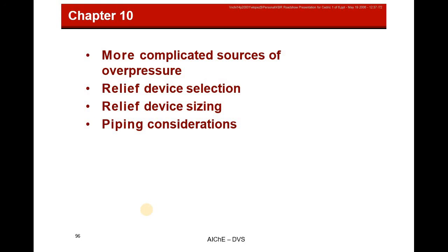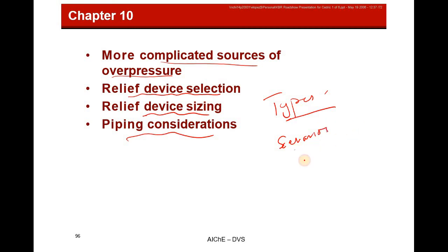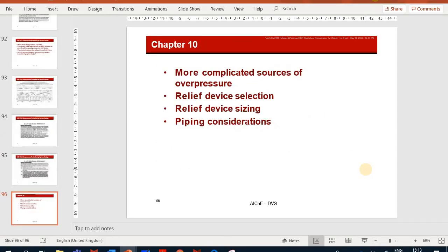Chapter 10 covers more complicated sources of overpressure, sizing and selection details, and piping considerations, but those are not covered in this course. In our coverage we have addressed: all types of relief valves, relief scenarios, general standards for using relief valves applied to different systems, knockout drums, and flares. Thank you very much - this is Dr. Bassam Al-Hamad teaching Chemical Process Safety by Crowl and Louvar.